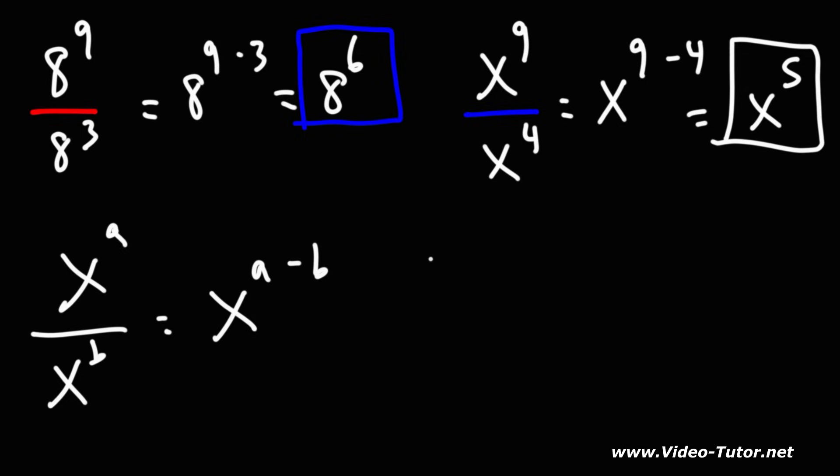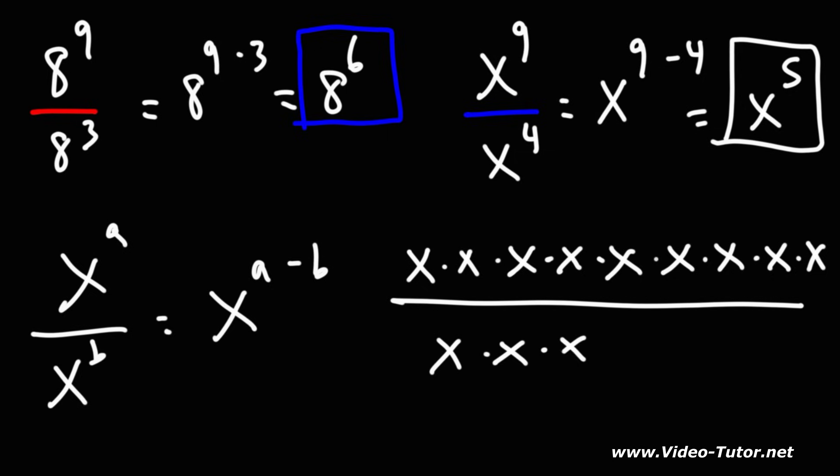Another way to see this, x to the 9 means that you're multiplying 9x variables together. x to the 4 means that you're multiplying 4x variables together. We could cancel 4x variables on the top and on the bottom. When we do that, we have 5x variables left over, which is x to the 5th.